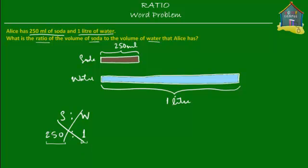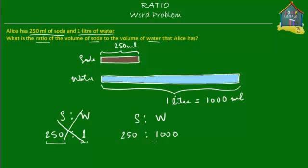There is not 250 times as much soda as water that Alice has. Since she has one liter of water, let's convert: one liter is equal to 1,000 milliliters. So we'll compare both liquids in milliliters. She has 250 milliliters of soda and 1,000 milliliters of water, so the ratio of soda to water is 250 to 1,000.